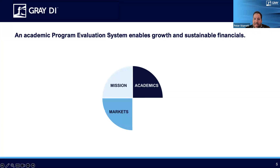Next, it's also necessary to understand the external market demand for programs. This is where you'll be able to identify opportunities to grow by identifying programs with high student demand, strong employment opportunities, and where the market's not saturated competitively. You'll especially need this data to identify potential new programs to launch, because other categories like academic outcomes and margins won't exist for new programs. It's also important for evaluating current programs — identifying growth opportunities, or flagging programs that may be declining. And understanding: is that a market decline or an internal decline?